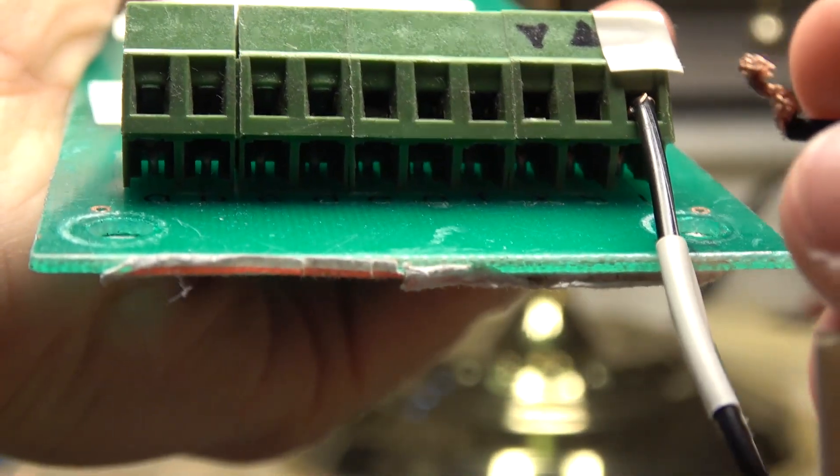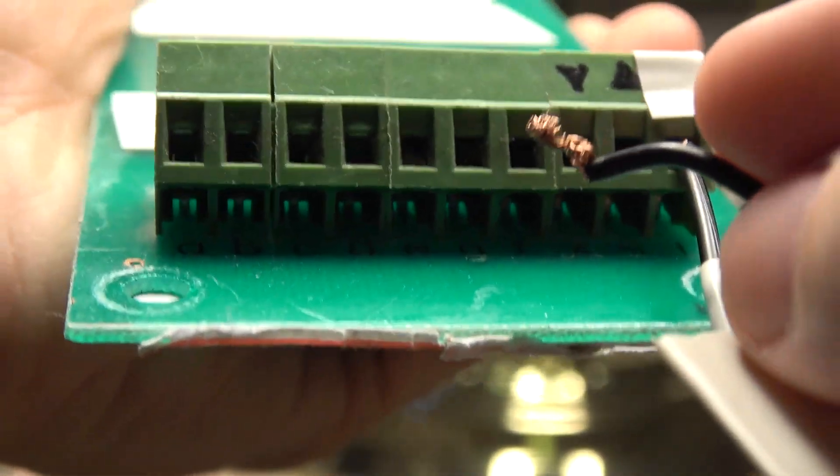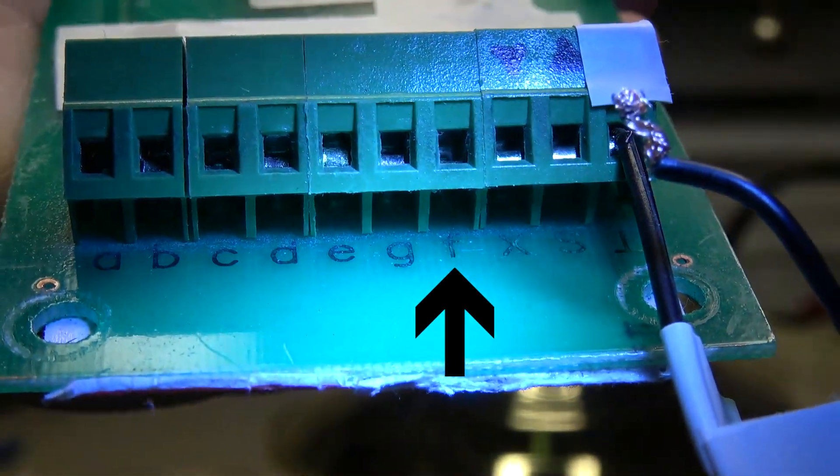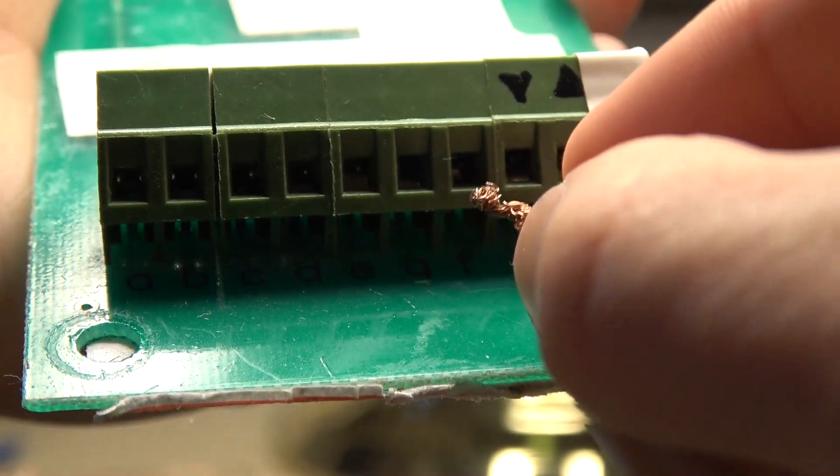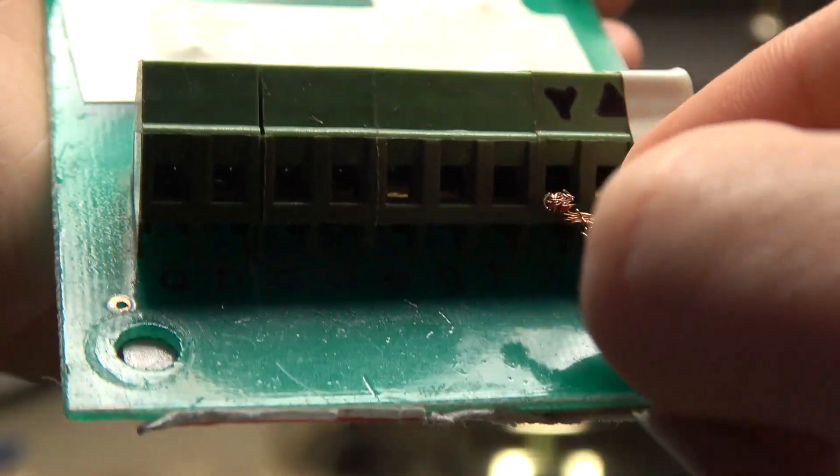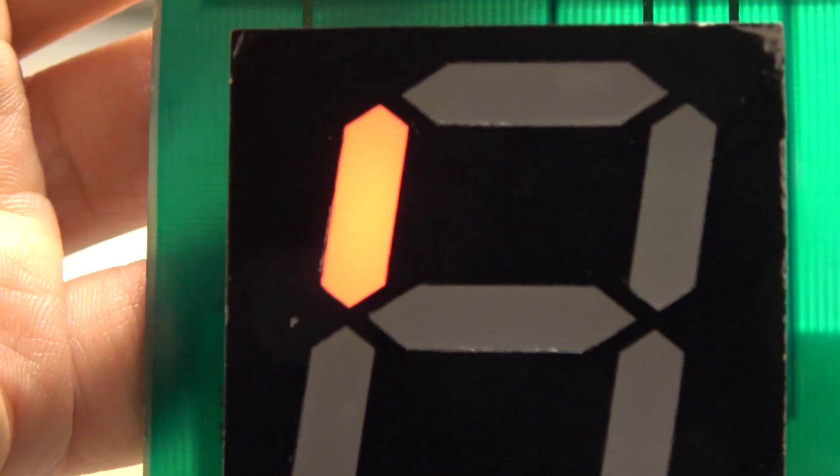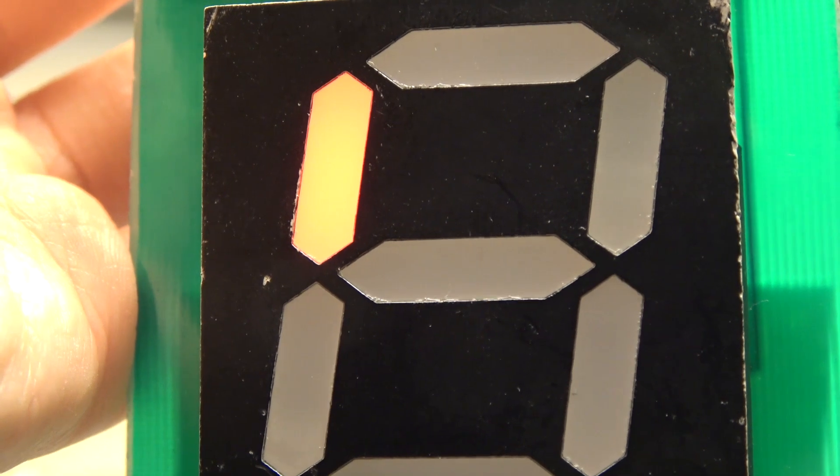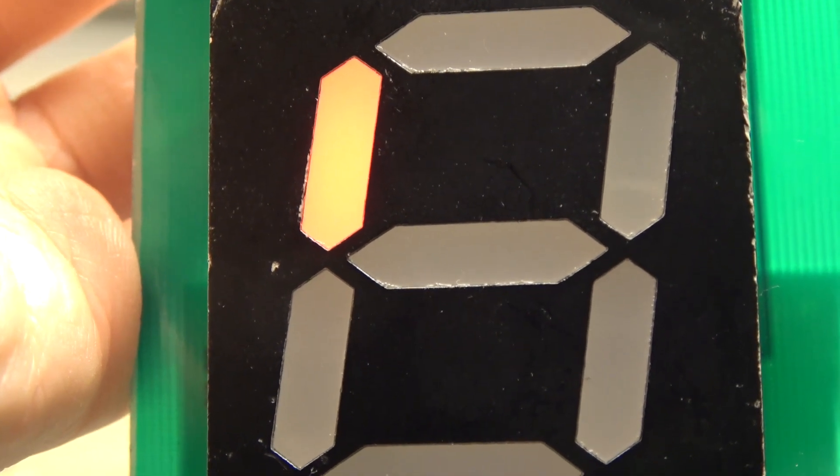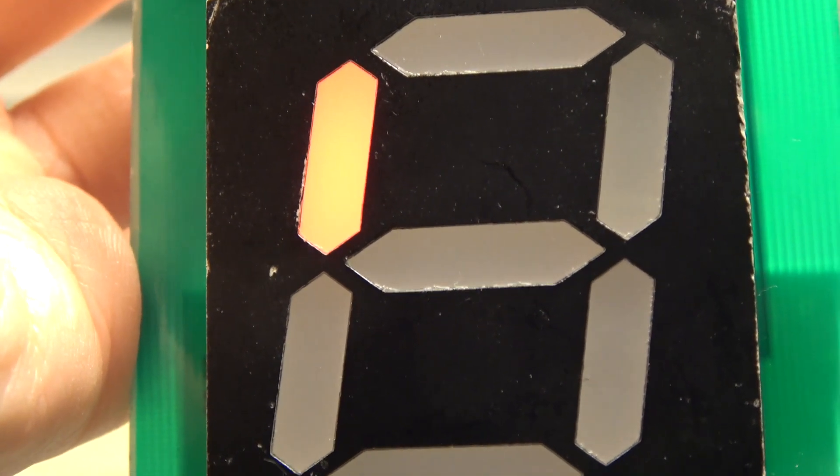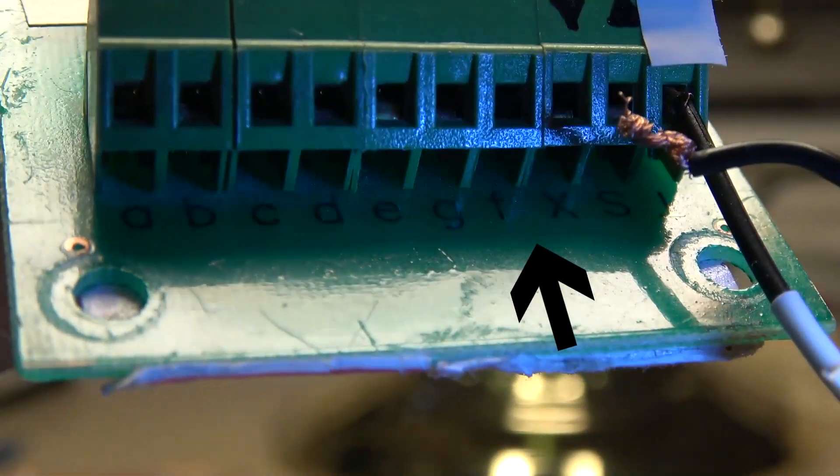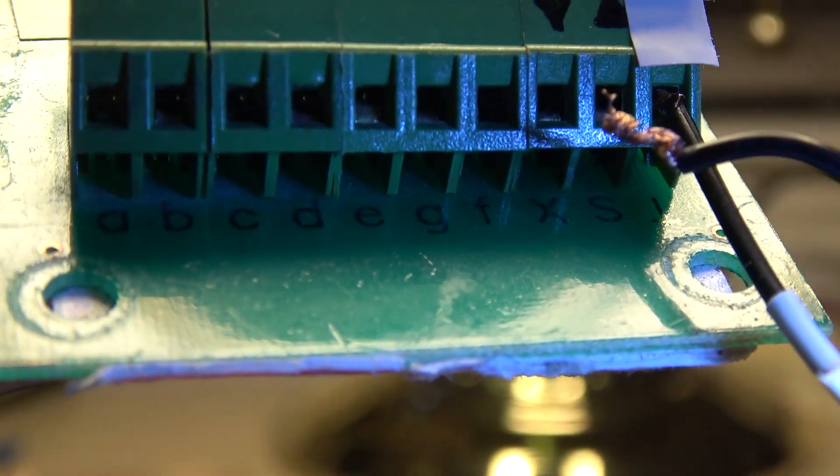So, what we're going to do is we're going to place this wire onto the lowercase F slot right there. So, we're going to place it in there. And that lights up this segment right here, which is the upper left-hand line segment right there. That lights up for lowercase F.